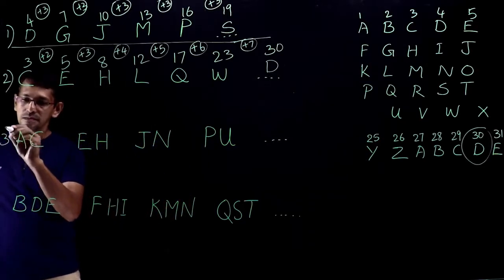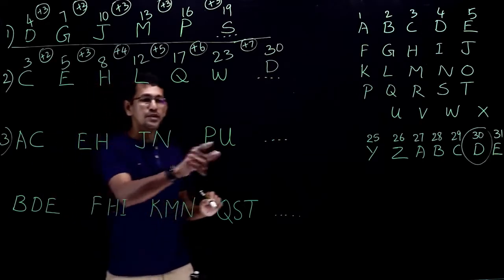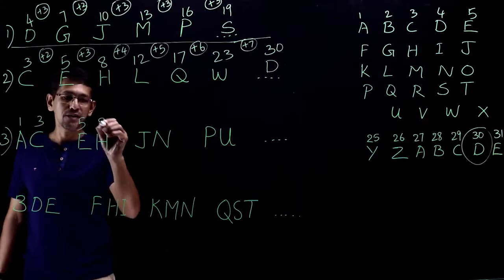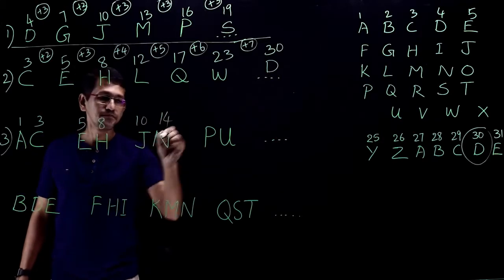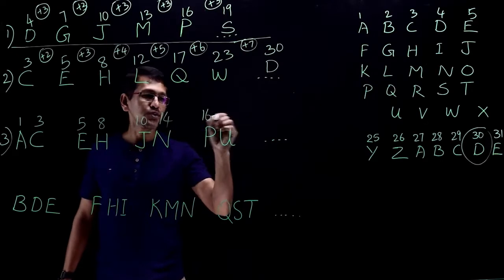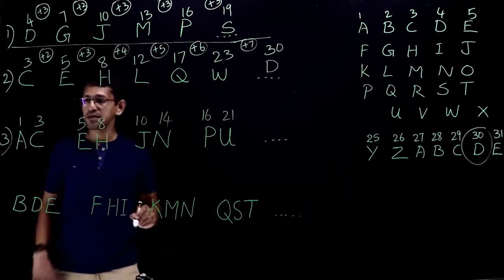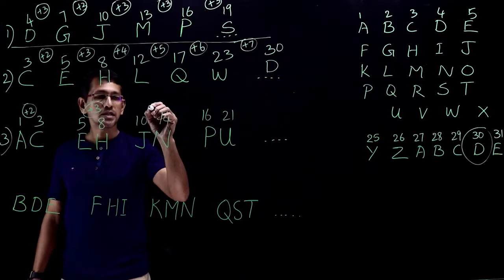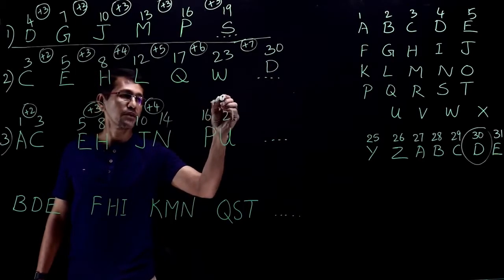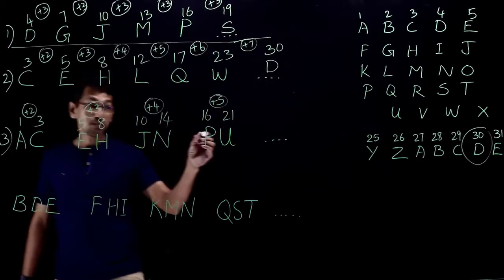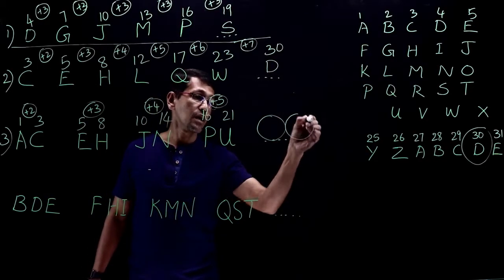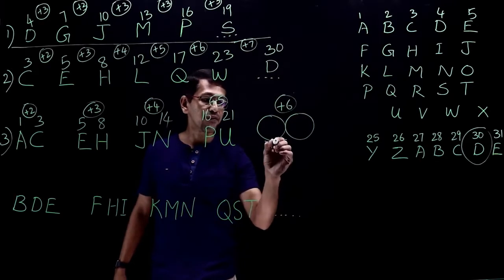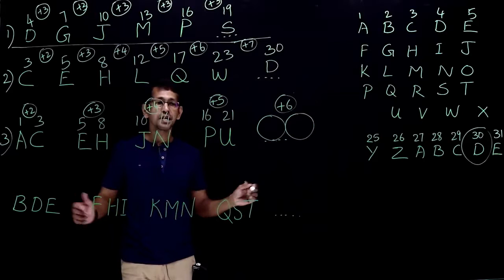Question number three: AC, EH, JN, PU. These are pairs of letters, so what would be the next pair? Try this one: 1 and 3, 5 and 8, 10 and 14, 16 and 21. If you look at these pairs, 1 plus 2 is 3, 5 plus 3 is 8, 10 plus 4 is 14, 16 plus 5 is 21. So the next pair will definitely have two letters, and the difference is, in this case, 2, 3, 4, 5, and the next one would be 6. If you get the first letter, definitely you can get the second letter. How do we get it? That's a question.